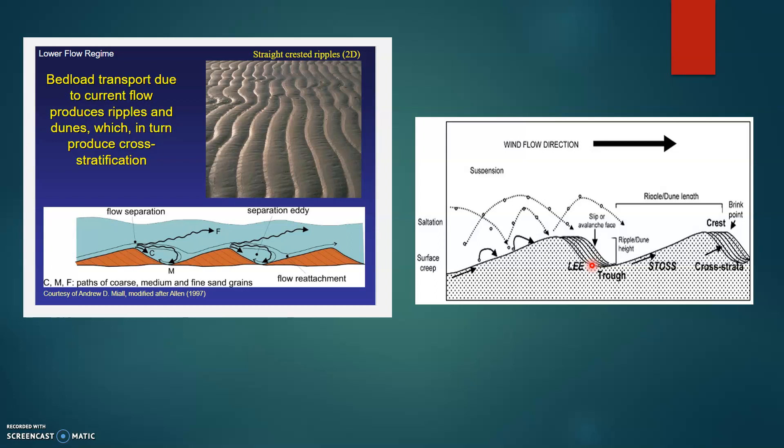So if we've got more deposition happening on the leeward side compared to the erosion happening on the dune length, then we can maintain and have more cross stratified deposits.